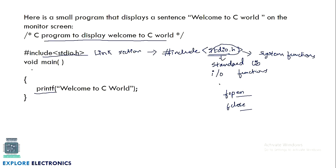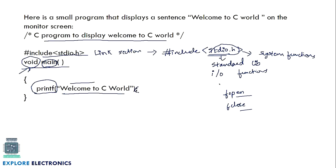This is the main function. We have written 'void' which means this main function will not return anything. The function name is main and here we don't have any arguments. Inside this function we are just printing a line using printf, which is a system function. Inside printf we include the text to display within double quotes. This is the syntax to print anything on the monitor — to understand the different sections of the program.